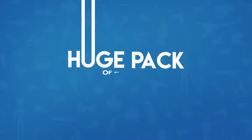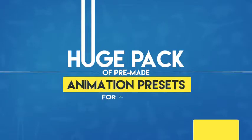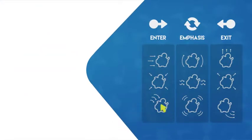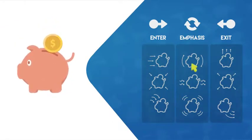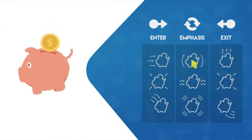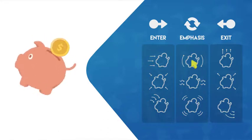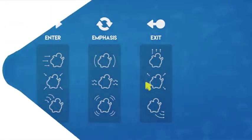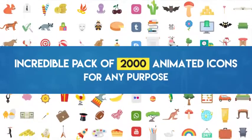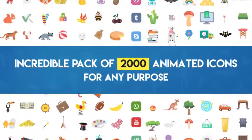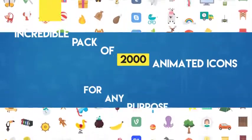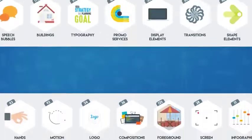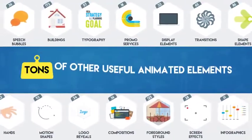A huge pack of pre-made animation presets for any items. Use intro, emphasis, or exit animation presets to quickly create eye-catching animation for any static item like image, text, logo, icon, or similar elements. Incredible pack of 2,000 animated icons for any purpose. 125 cool animated backgrounds, and tons of other useful animated elements.